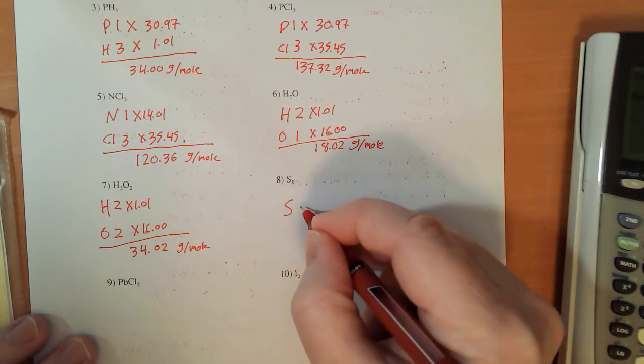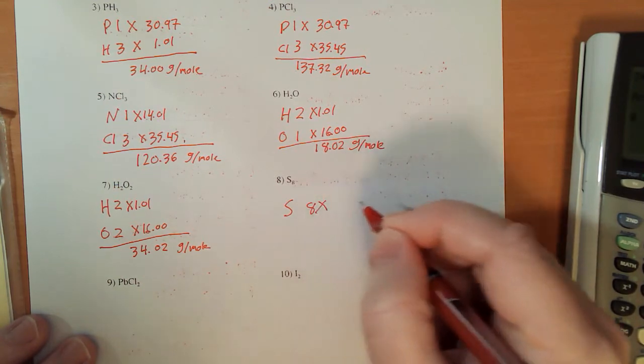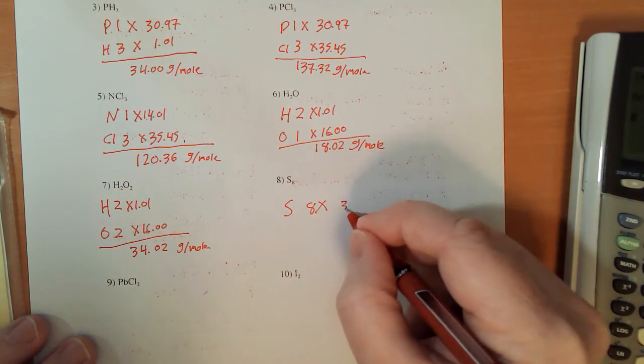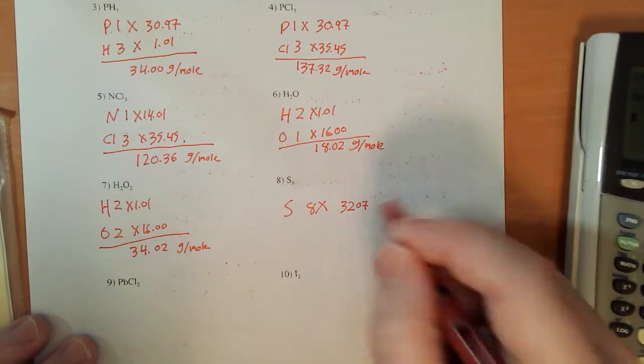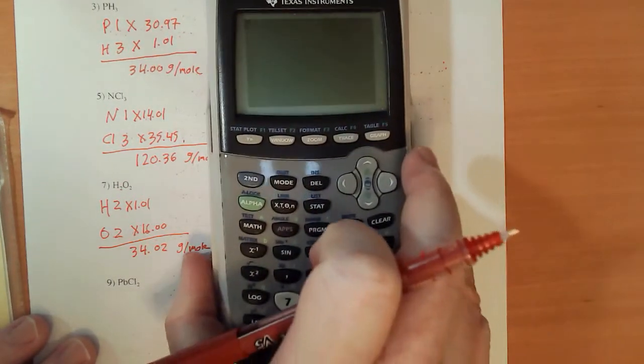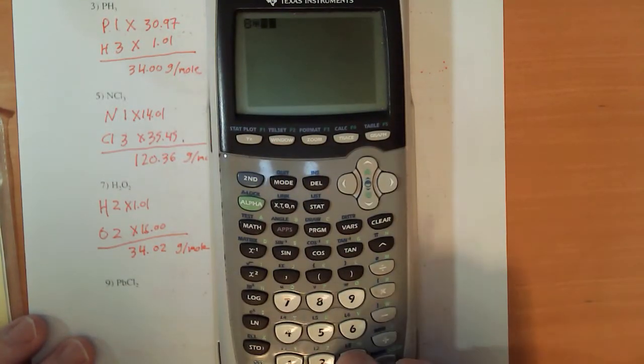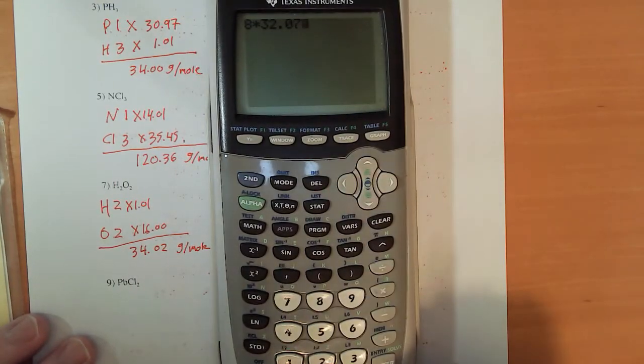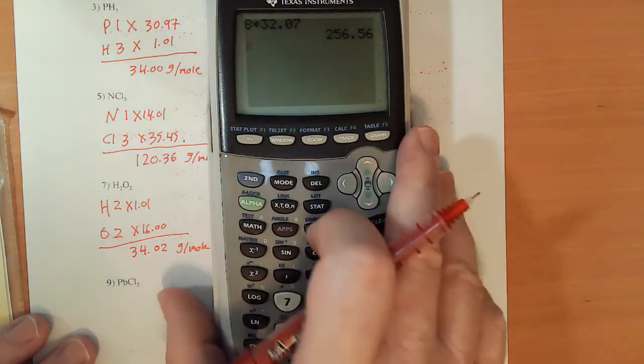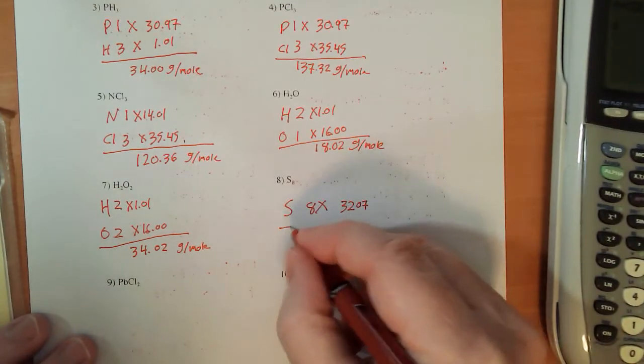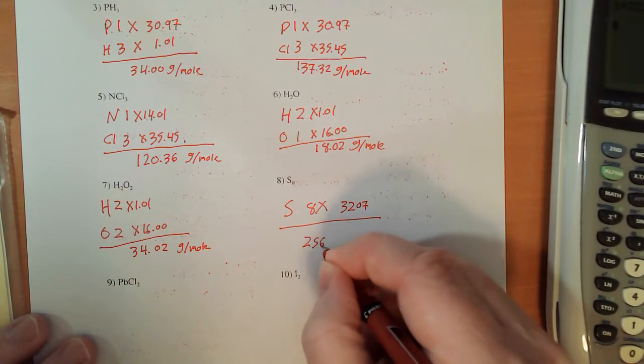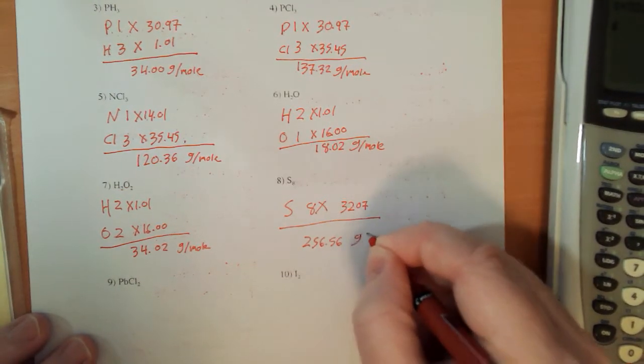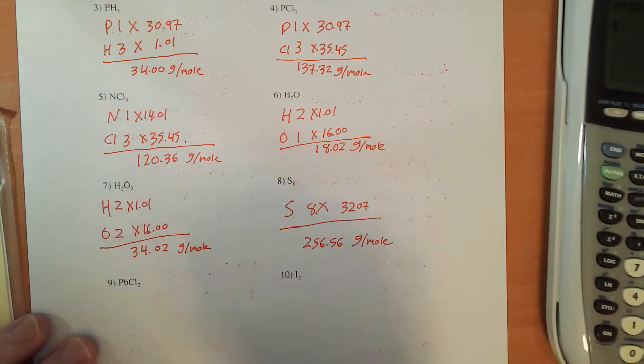Sulfur, 8 times 32.07. So 8 times 32.07, nope, make that a 7, there we go. 256.56 grams per mole.